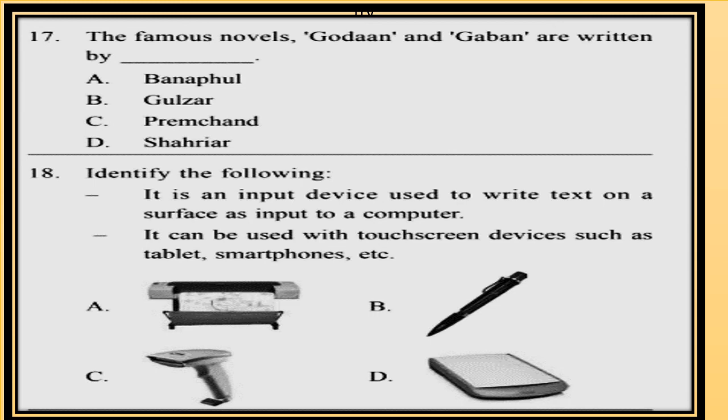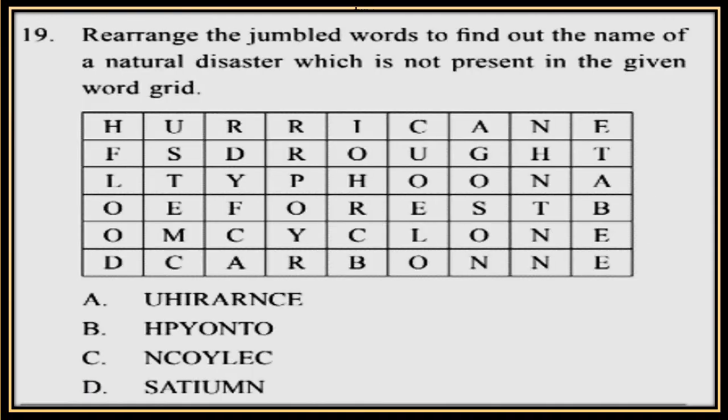Question 18. Identify the following: it is an input device used to write text on a surface as input to a computer. It can be used with touch screen devices such as tablets, smartphones, etc. Identify which input device this is. Question 19. Rearrange the jumbled words in options A, B, C, D to find out the name of a natural disaster which is not present in the given word grid.